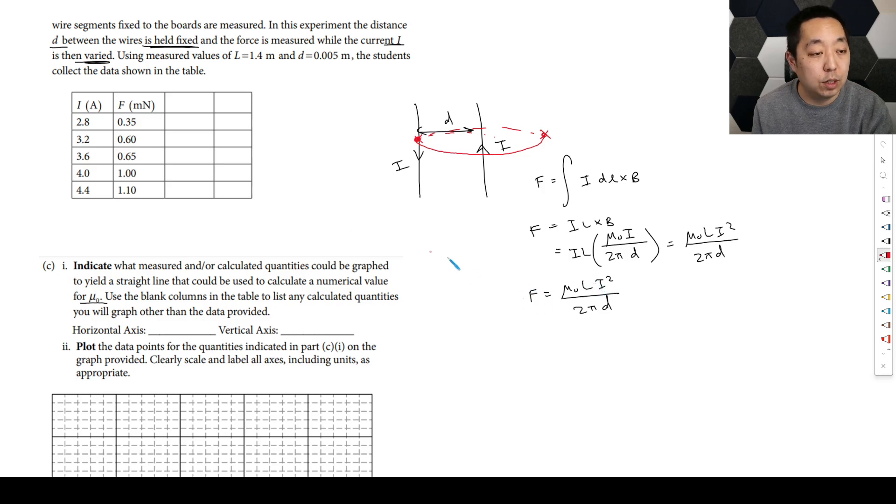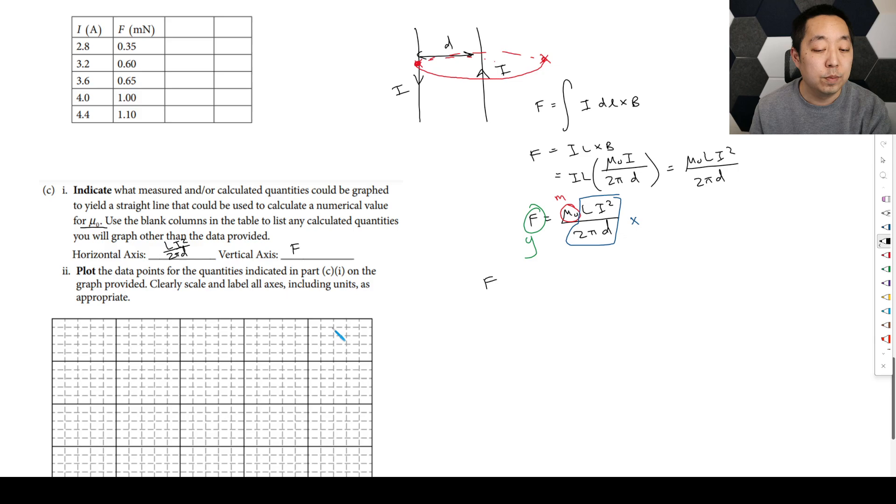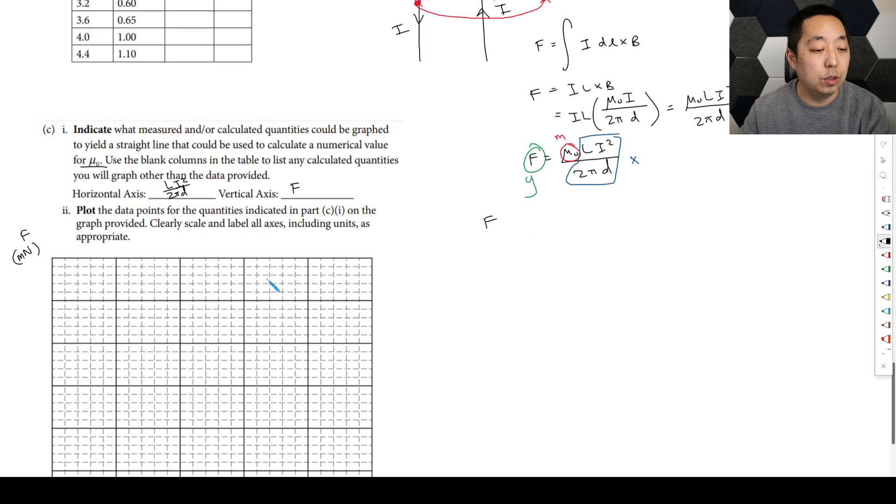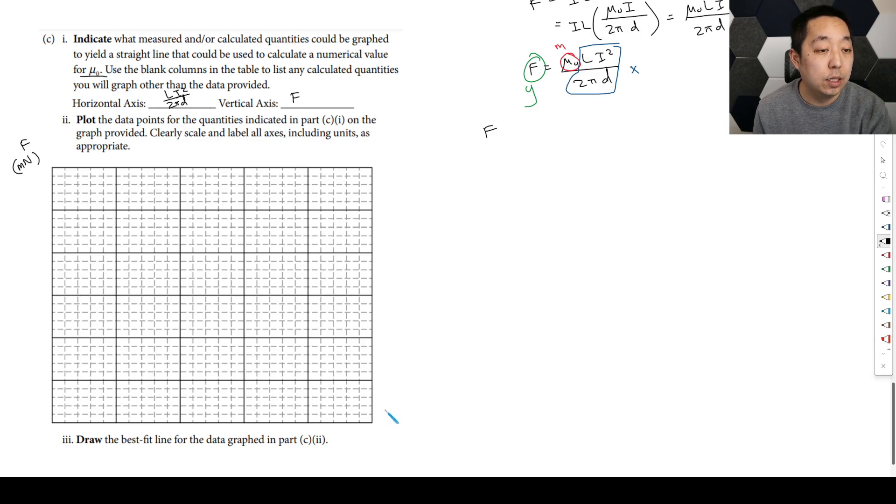And the current is varied and the force is going to vary. Those are two variables there. Everything else is constant, right? So if we plot this - if you want mu naught to be the slope, then ultimately, the easiest way to do that is just to say, well, this should be x and this should be y. And so then if I plot force on the vertical axis and L I squared over two pi D on the horizontal axis, then that will work. All right. So we want to do the forces in millinewtons, I guess we're going to do the forces here. And then we're going to do on the x axis, we want to plot L over D unitless. So this is just going to be L I squared over two pi D, which is measured in amp squared.